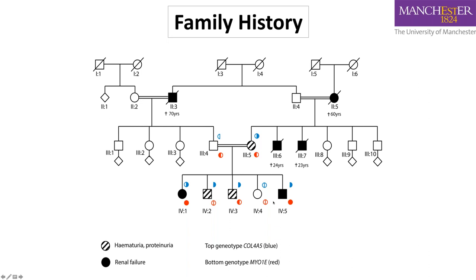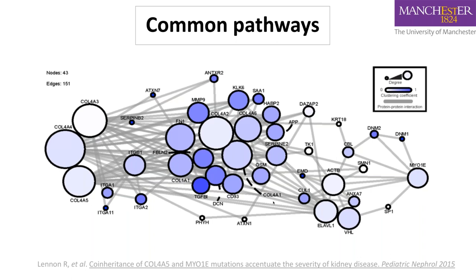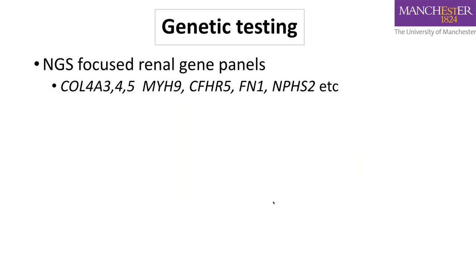The family pedigree showed renal failure in grandparents and affected siblings as described. The youngest sibling with nephrotic syndrome and the older female who presented in end-stage both carried the myosin-1E gene change. This complex case illustrates how genetics can help explain phenotypic variation. There is a connection between type 4 collagen and myosin-1E through protein-protein interactions, suggesting these mutations may augment the phenotype through shared biological pathways.